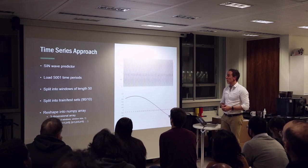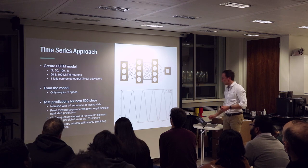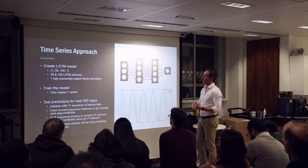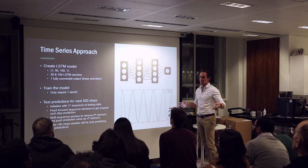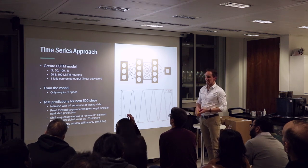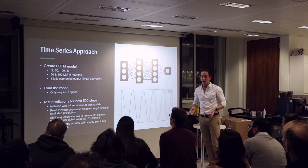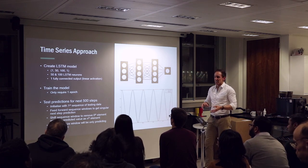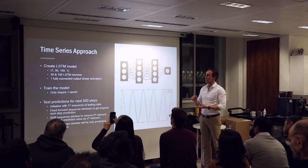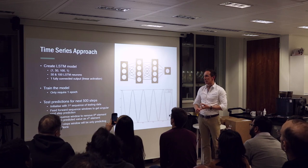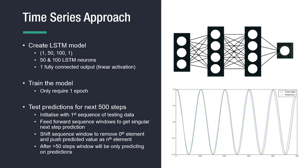Moving on to the actual prediction of this particular sine wave. The network I actually use has one input of one dimension with size-50 windows, then two hidden layers — the first with 50 LSTM modules and the second with 100 LSTM modules — and then that feeds into just one single normal output neuron with a linear activation function, which then predicts what it thinks the next part of that sequence should be — in this case, the next part of the sine wave data.